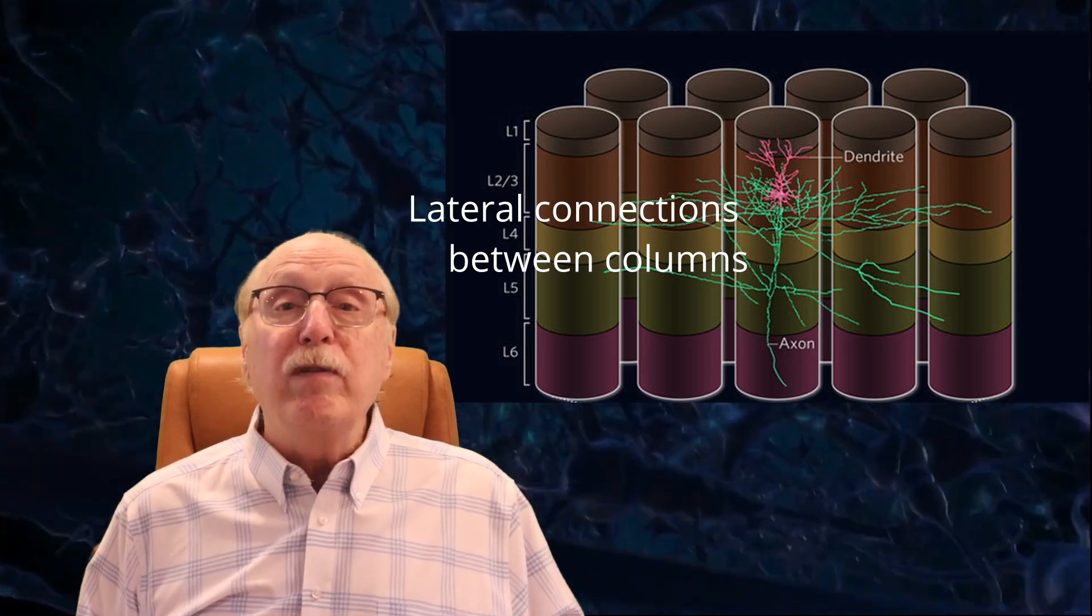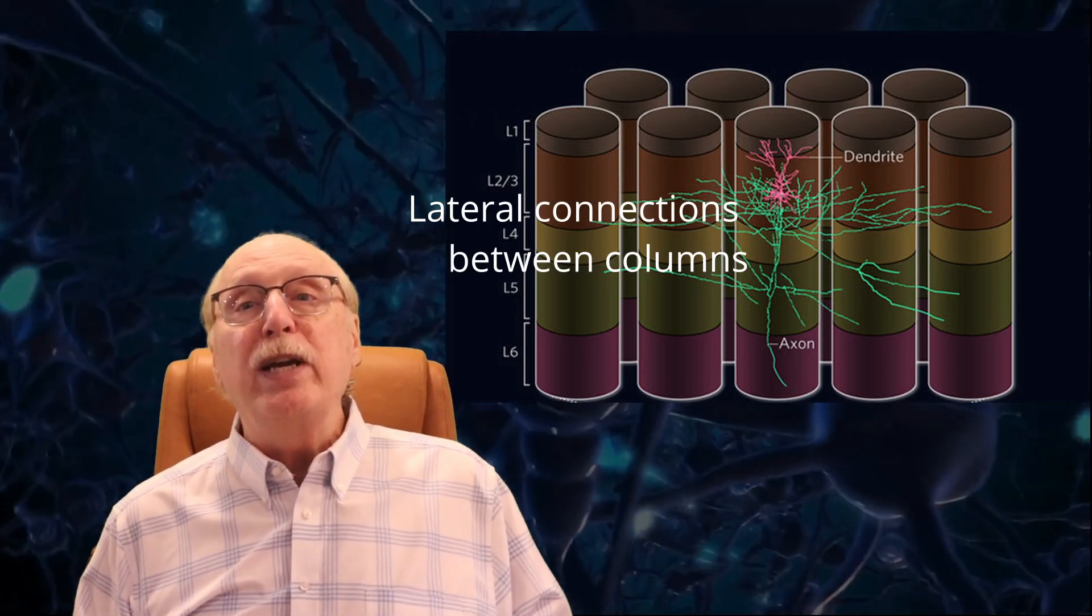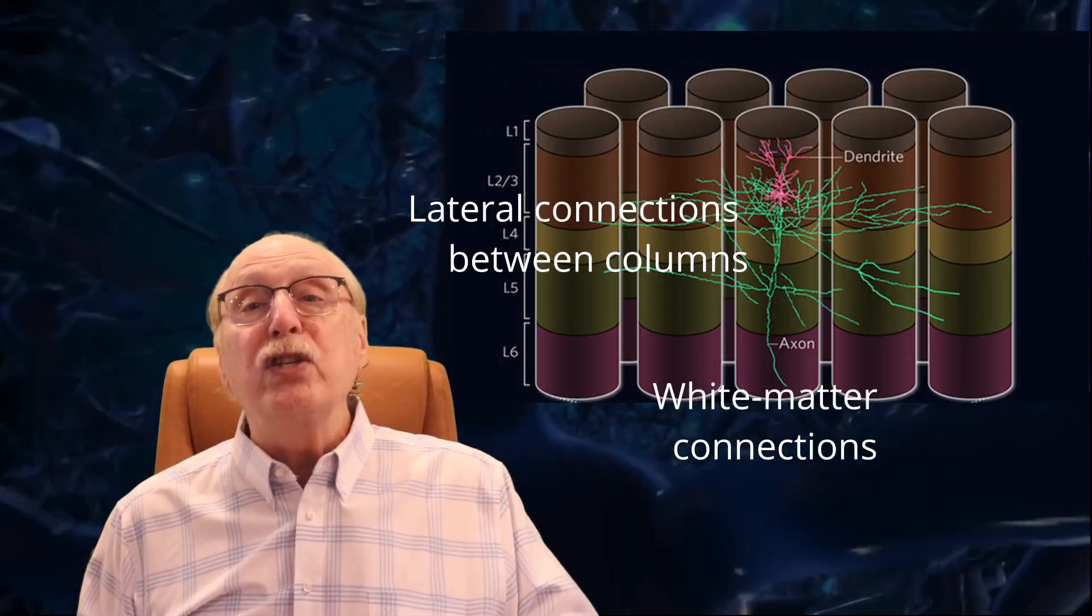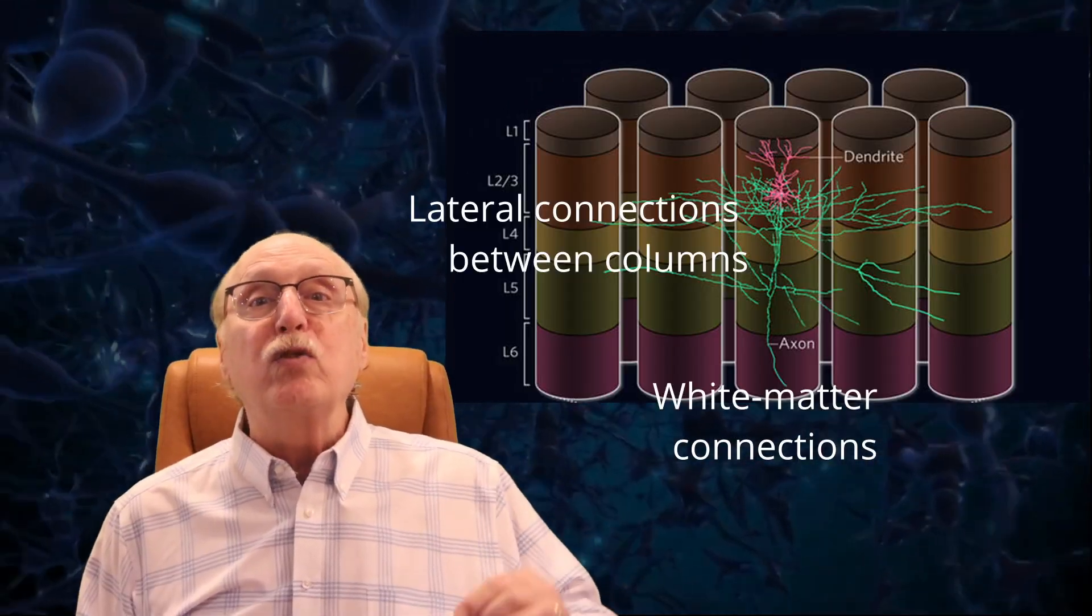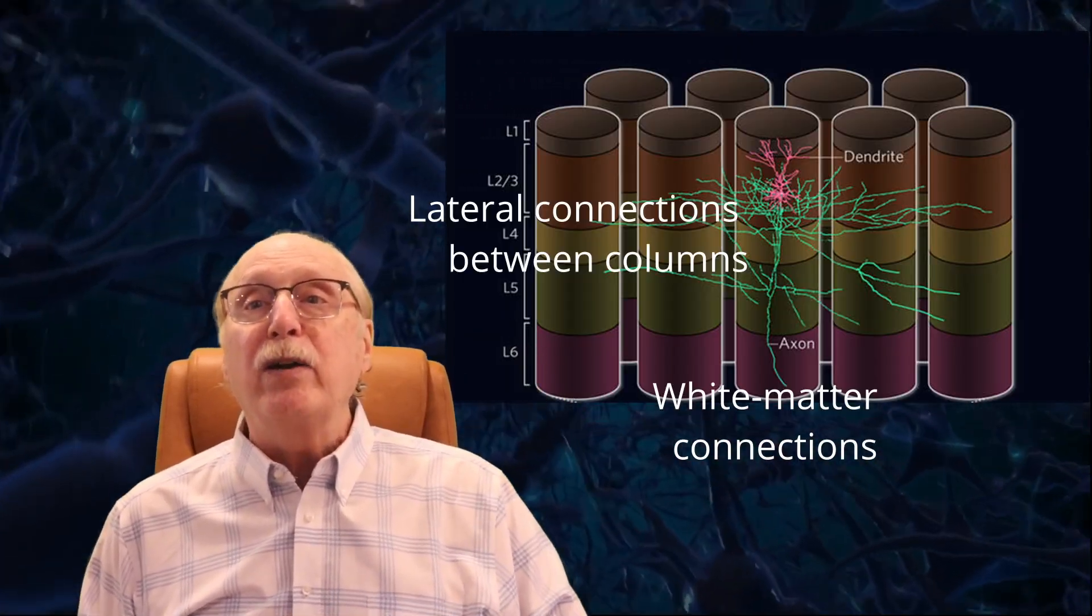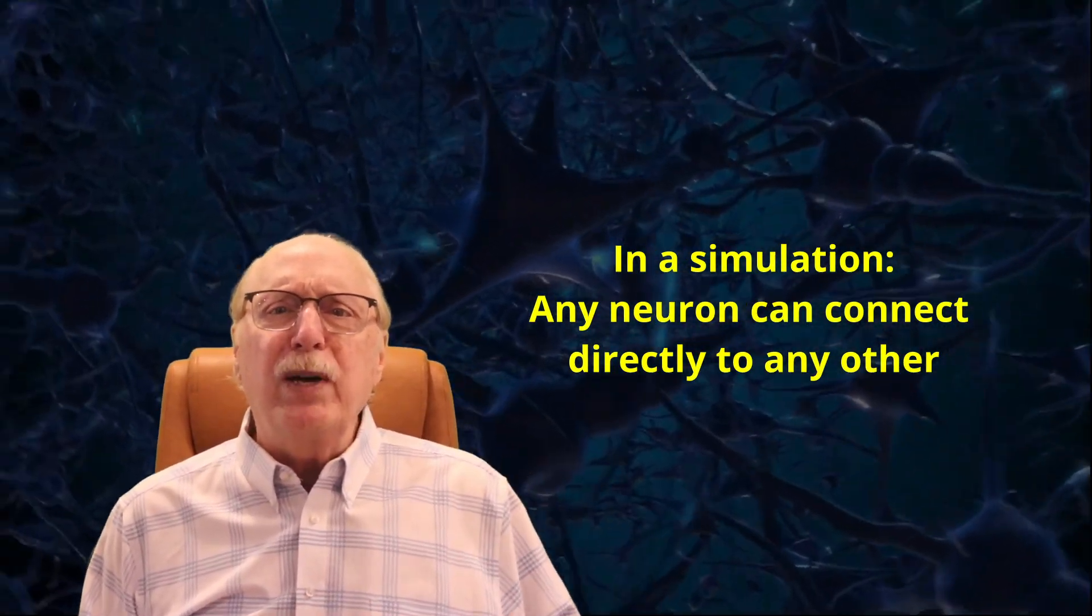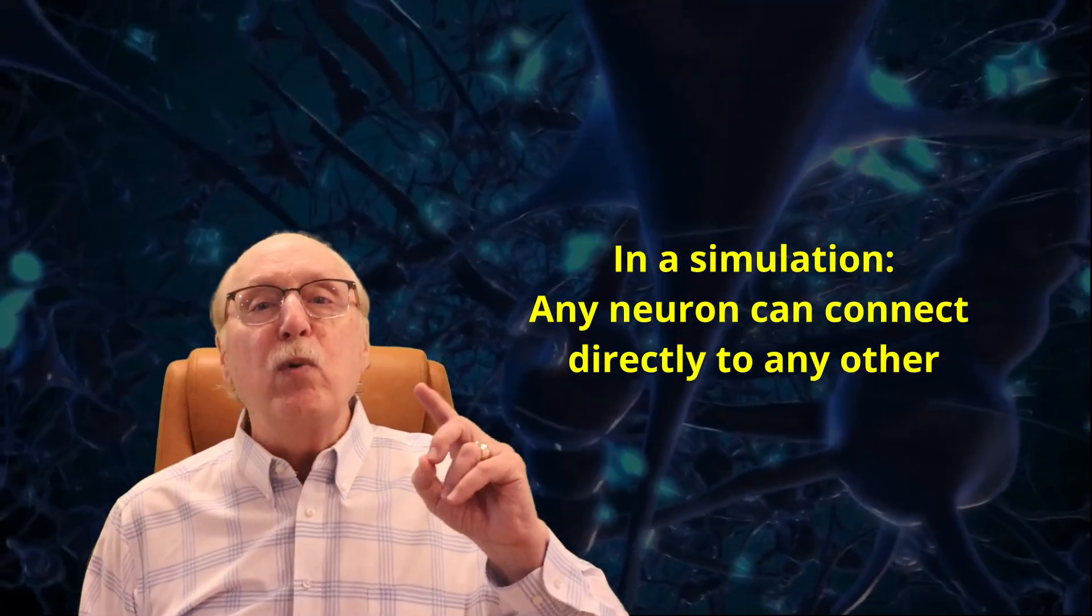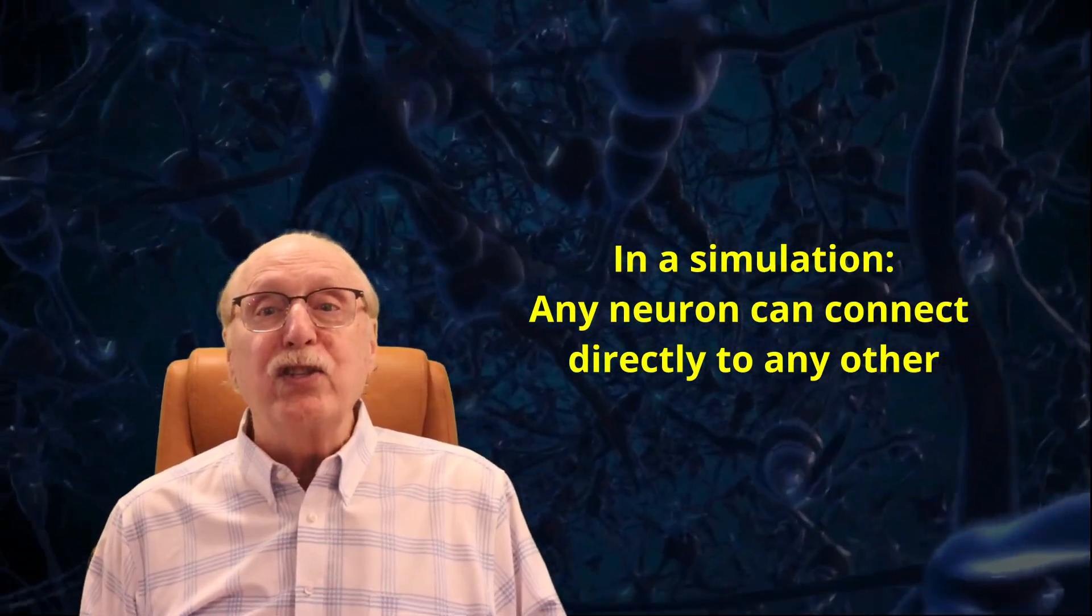If a connection is needed between nearby columns, the brain can utilize one of the shorter lateral connections. If the connection is between columns at a greater distance, the connection uses one of the longer connections, which dives into the white matter deeper in the brain. In our computer simulations, connections are represented by a few numbers in an array, so we don't need to make this distinction, and we treat all connections as lateral.